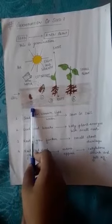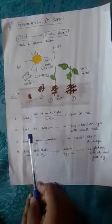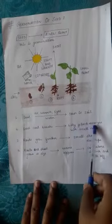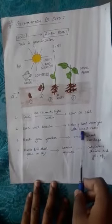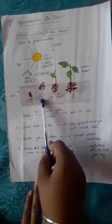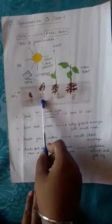In the next step, the seed coat breaks and the baby plant emerges with a small root. It is shown in the diagram by number 2.